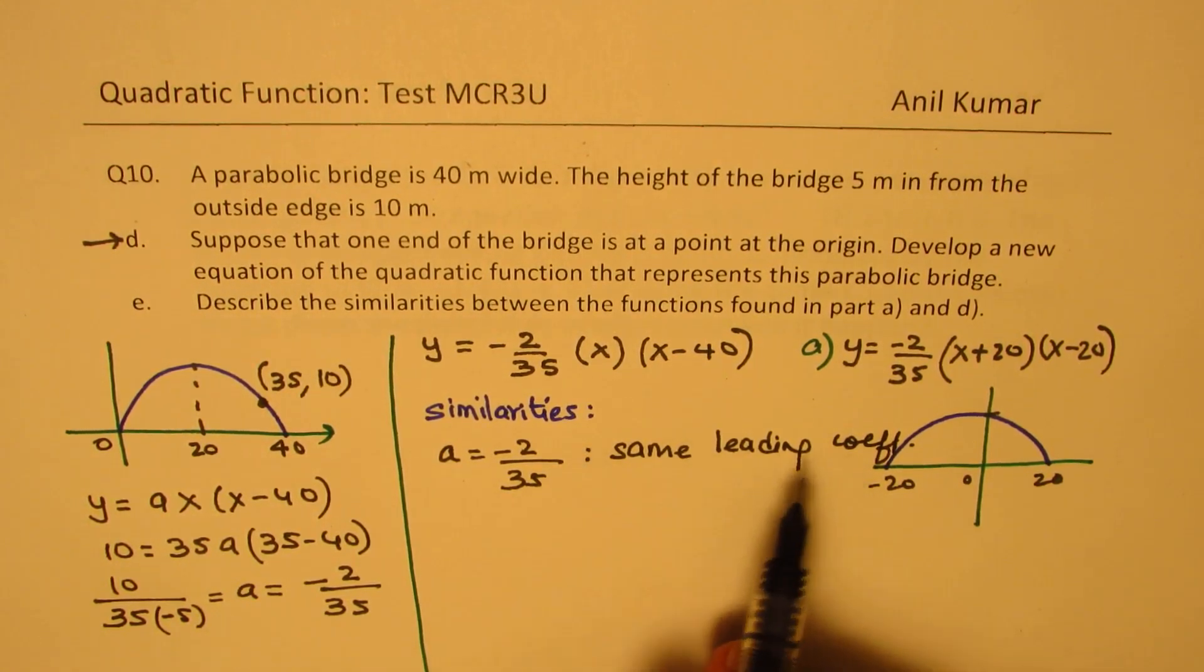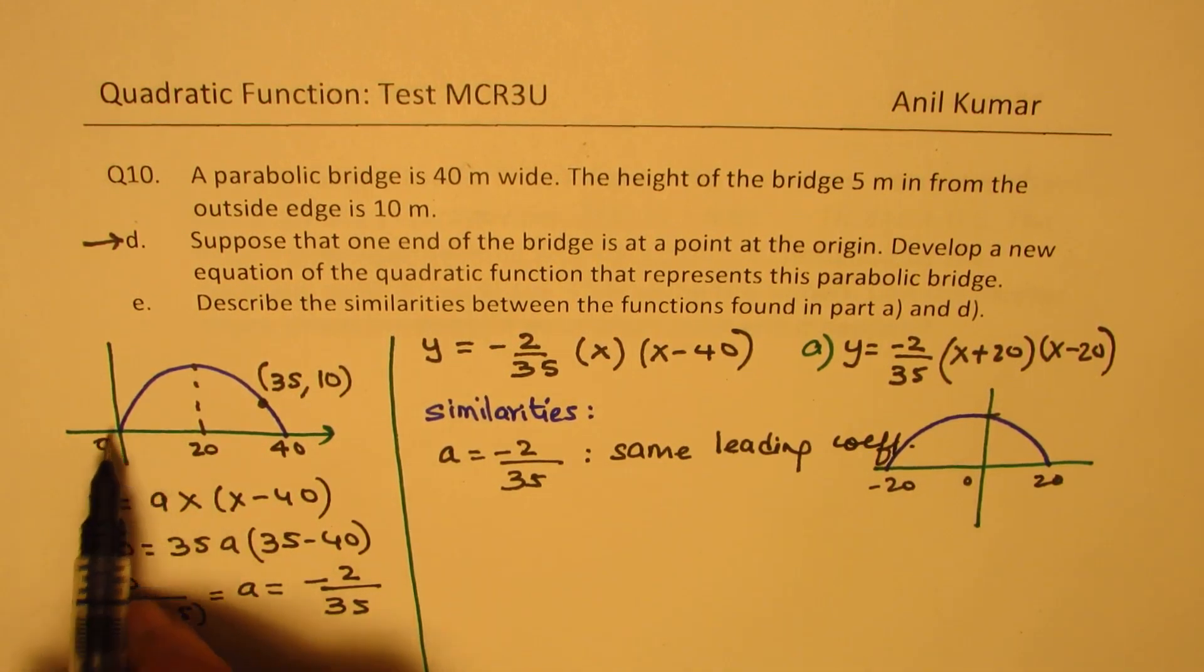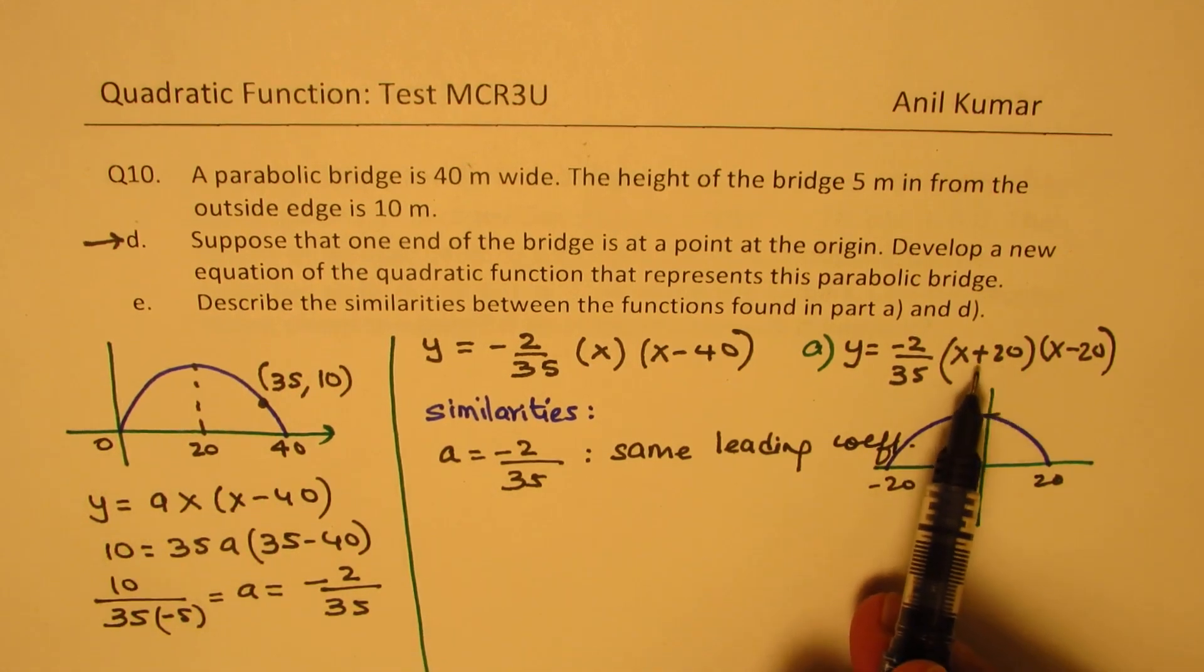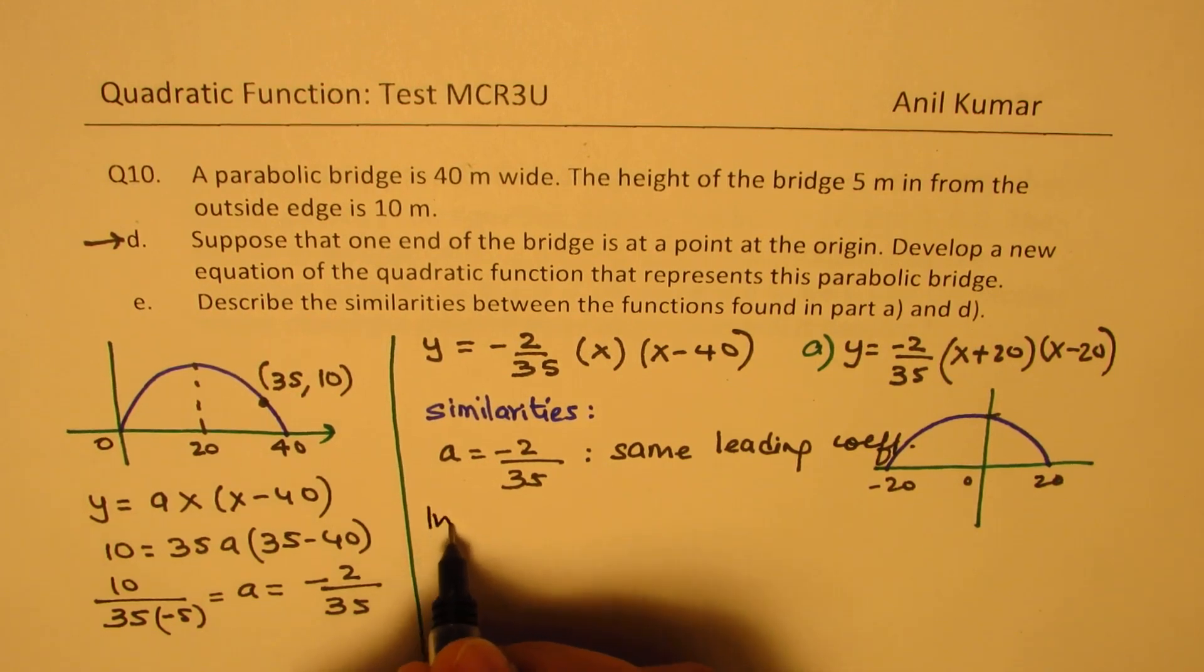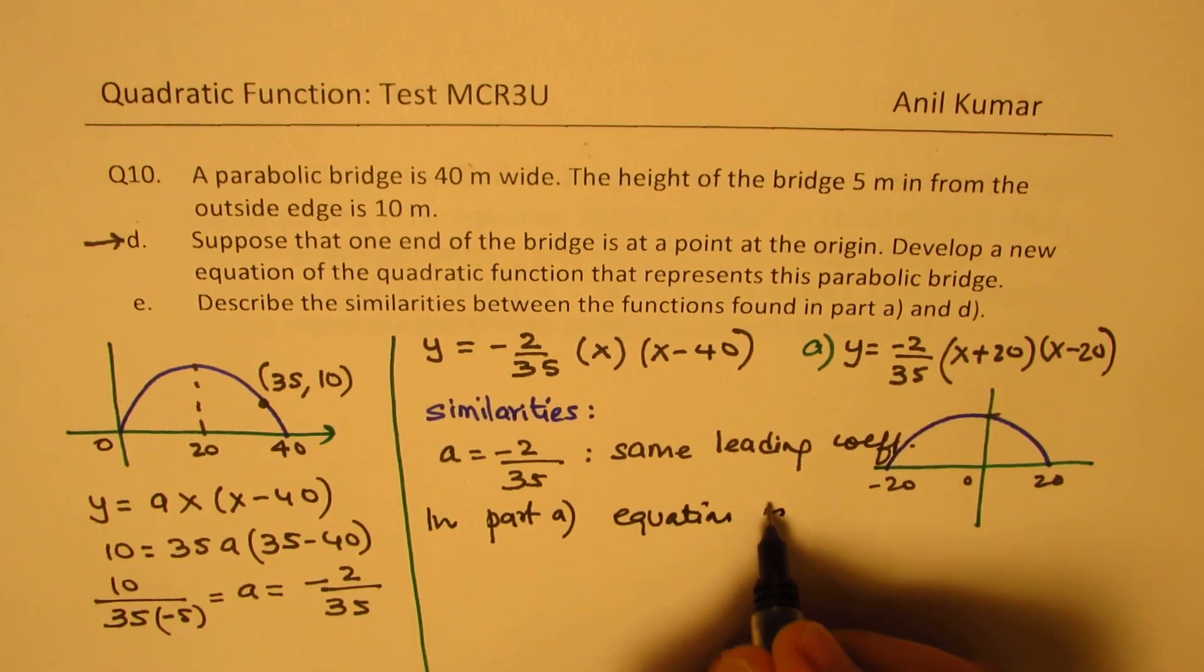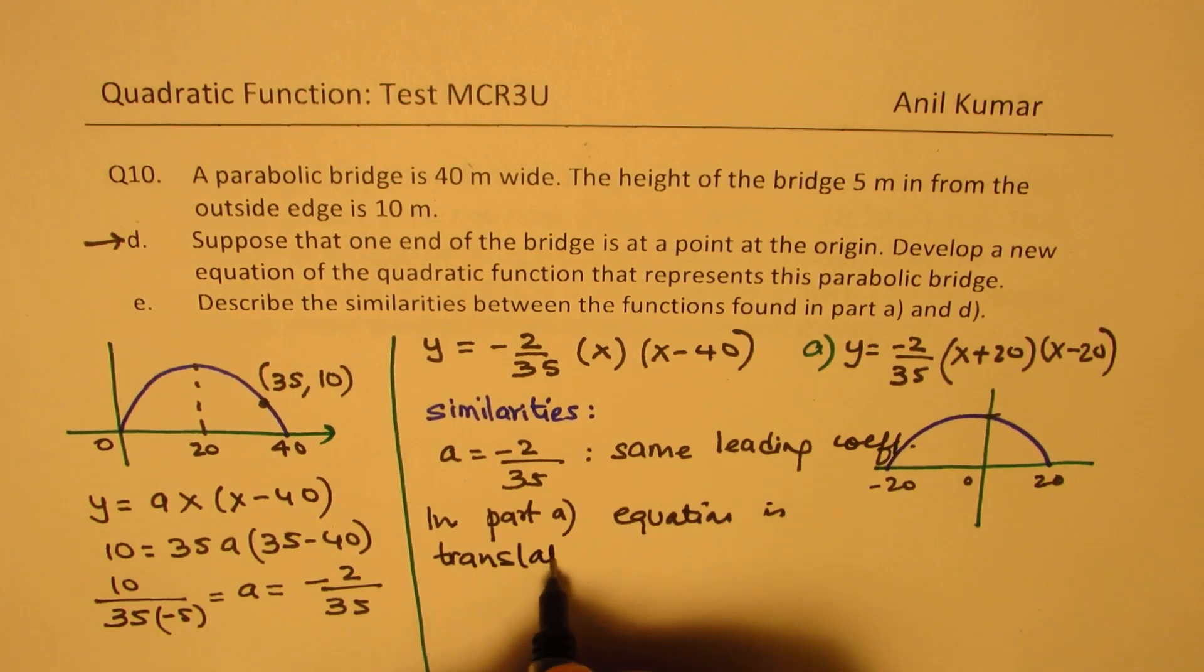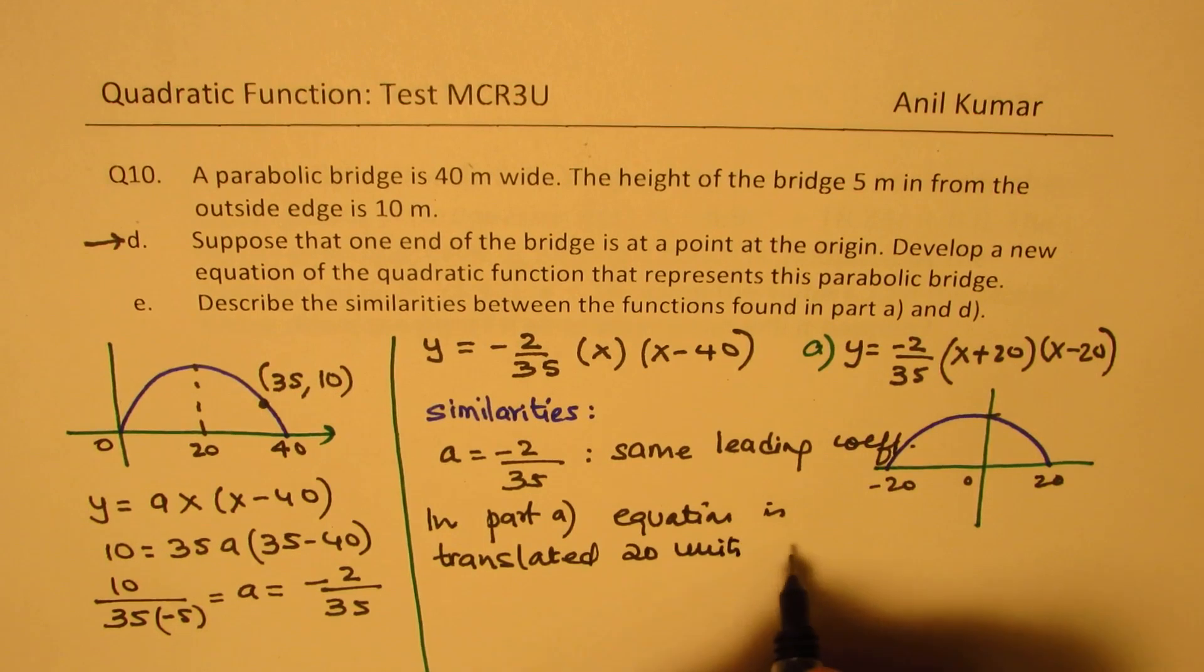How are they related? If you consider, we can see that part B, you know, the axis has moved. So if you compare these two equations, it is in, we can say, in part D, equation is translated 20 units, right, correct?